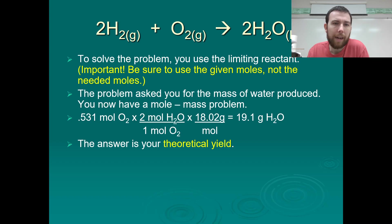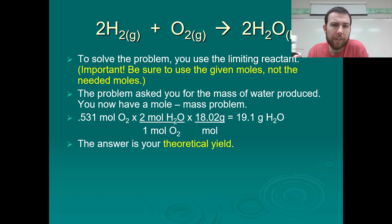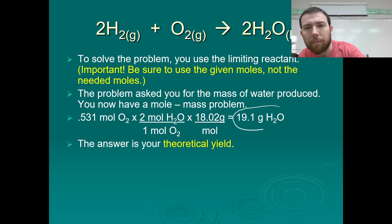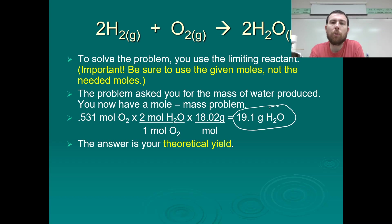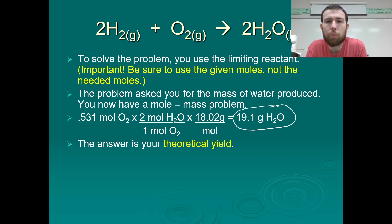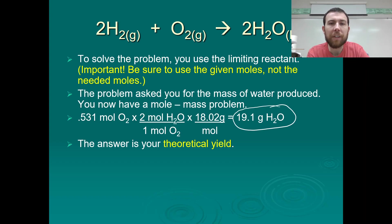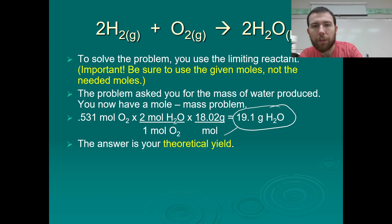You might also be asked how much of your excess reactant is left over. Remember, this 19.1 grams of water is your theoretical yield — assuming the reaction is 100% efficient, no product is lost, and all limiting reactant is consumed. So 19.1 grams is our theoretical yield for this reaction.